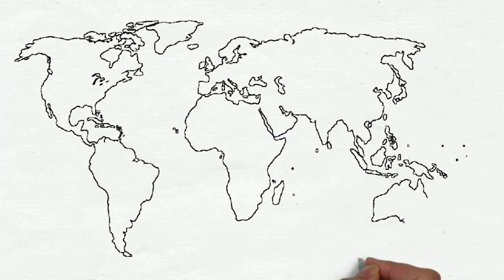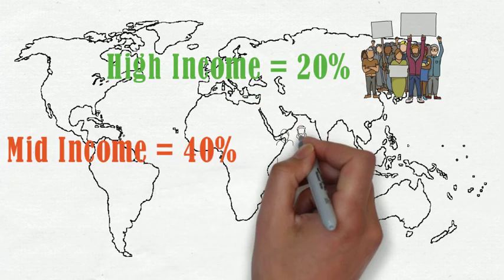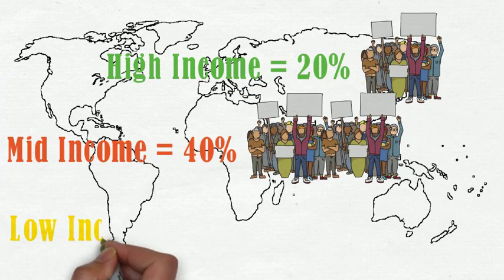This is what happens in a country. In most countries, the rich would probably be around 20%, 40% middle income earners, and 40% low income earners.